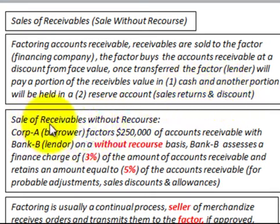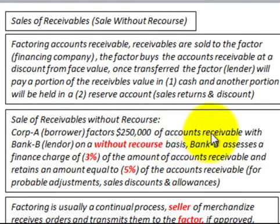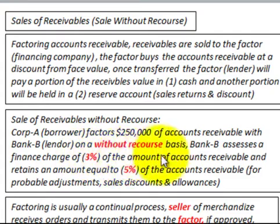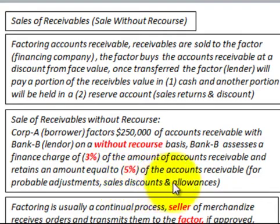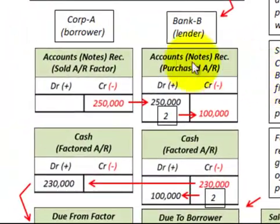Looking at our example — the sale of receivables without recourse — Corporation A, the borrower, factors $250,000 of accounts receivable with Bank B, the lender, on a without recourse basis. Bank B assesses a finance charge of 3% of the accounts receivable amount, and they retain an amount equal to 5% of the accounts receivable for probable adjustments — that's for sales discounts and sales allowances, not for any uncollectible receivables, as they are buying those outright.